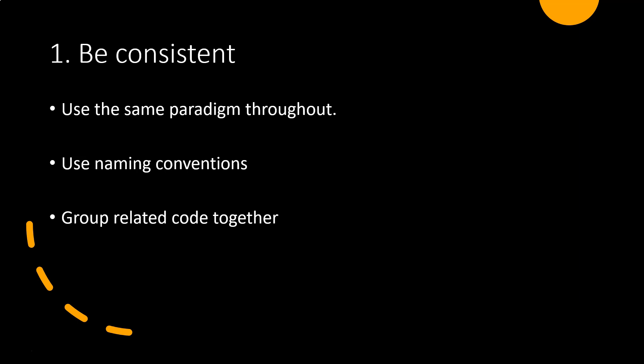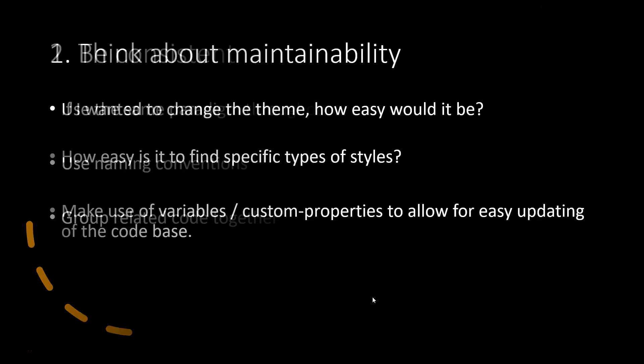Do we make use of inline styling at any point? There's not necessarily a right or wrong answer to these questions, but once we have a system or paradigm in place, we should be consistent with it throughout the project. If at any point we revisit the project, we should know exactly where to find anything — we know how classes are named because we've used a specific naming convention, and ideally related CSS styling will be grouped together, perhaps even in different files.